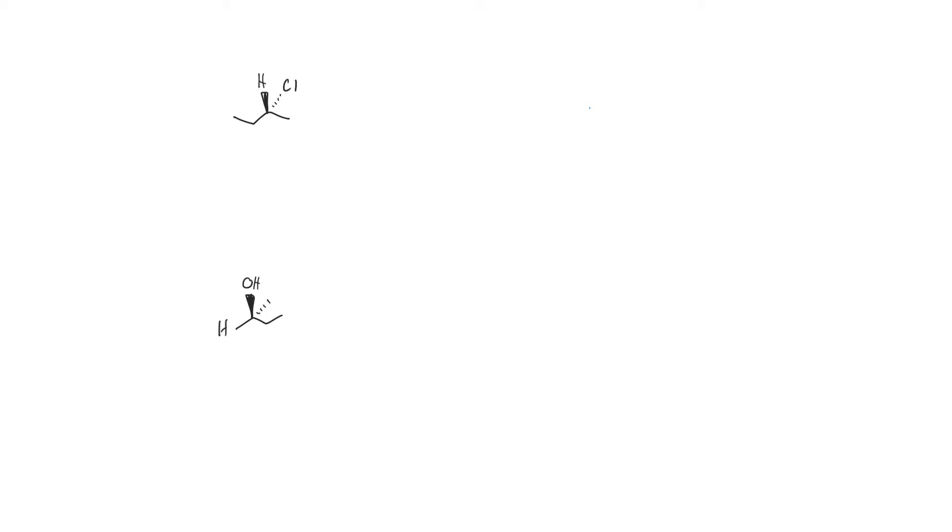Before we discuss assigning R and S configuration, I wanted to briefly discuss the concept of chirality. As we've read in the textbook, that is when a carbon has four different groups or things attached to it.